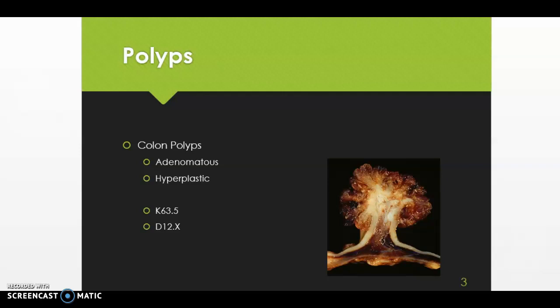If the documentation states the polyp is an adenoma or adenomatosis, we assign a code from D12 which classifies it based on the anatomical site of the polyp. We would use the code Z87.19 for a history of a hyperplastic colon or rectal polyp, Z86.01 for a history of an adenoma or a neoplastic polyp, and Z86.010 for history of unspecified colon polyp.